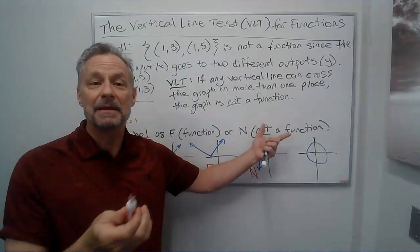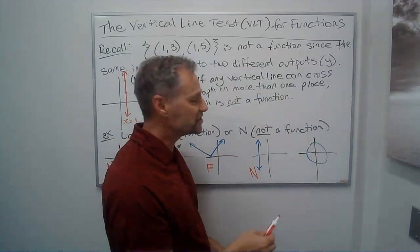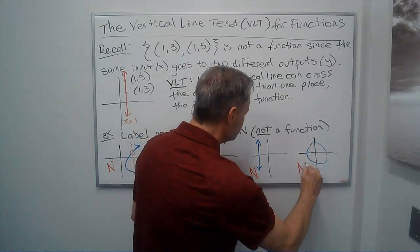And then I have a circle. Mine might look more like an ellipse. Here's a vertical line that crosses more than once. Not a function.